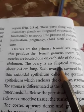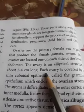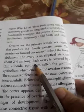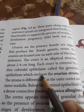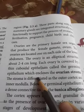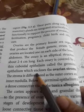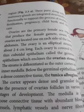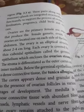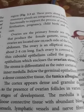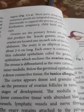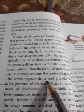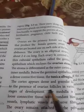Each ovary measures 2 to 4 centimeters in length. Each ovary is covered by cuboidal epithelium called the germinal epithelium, which encloses the ovarian stroma. The stroma is differentiated into two parts: the outer part called the cortex and the inner part called the medulla. The cortex appears dense and granular due to the presence of ovarian follicles.